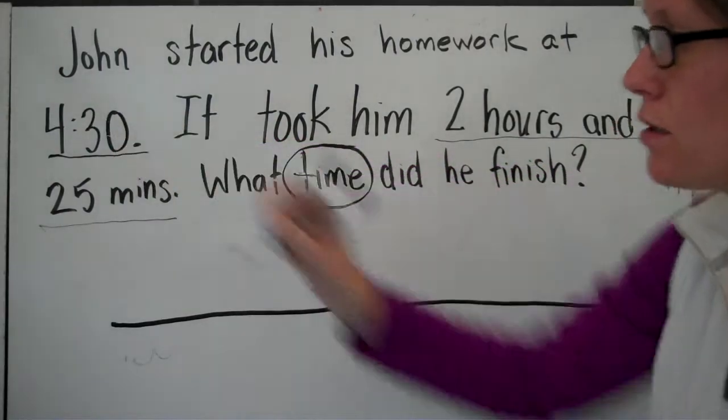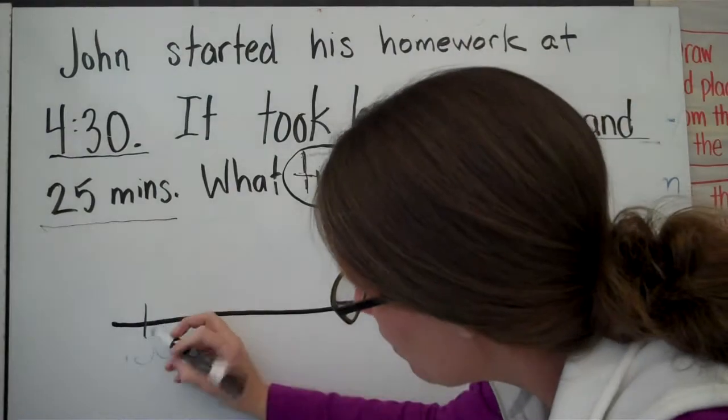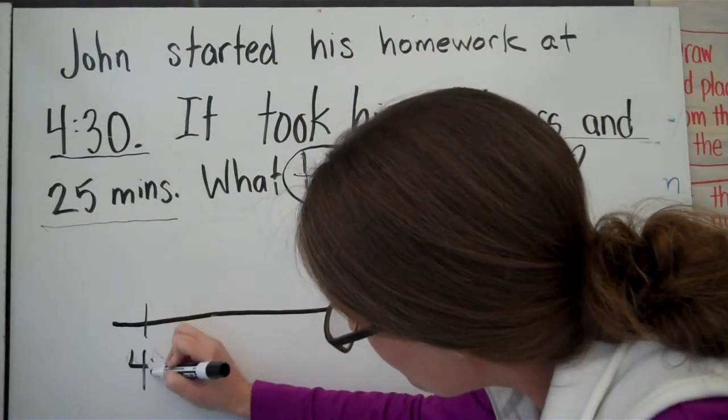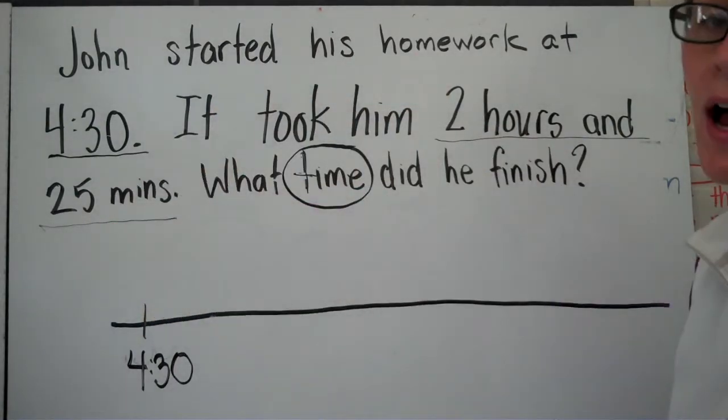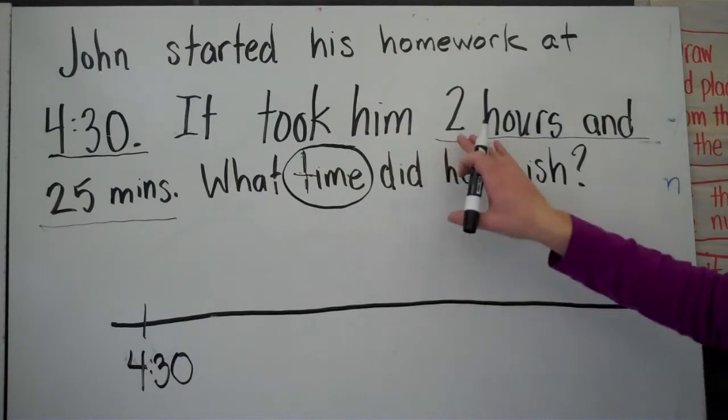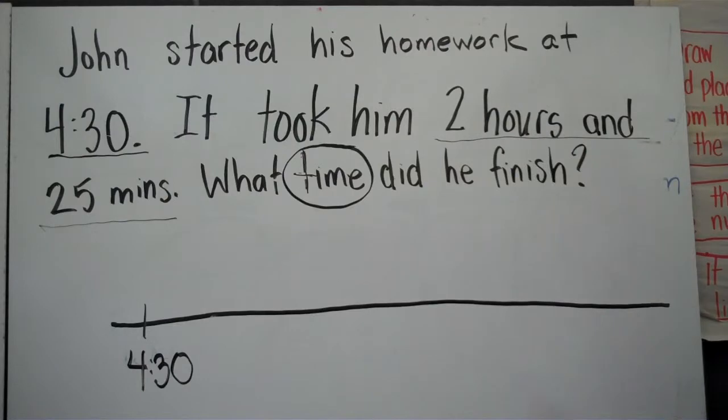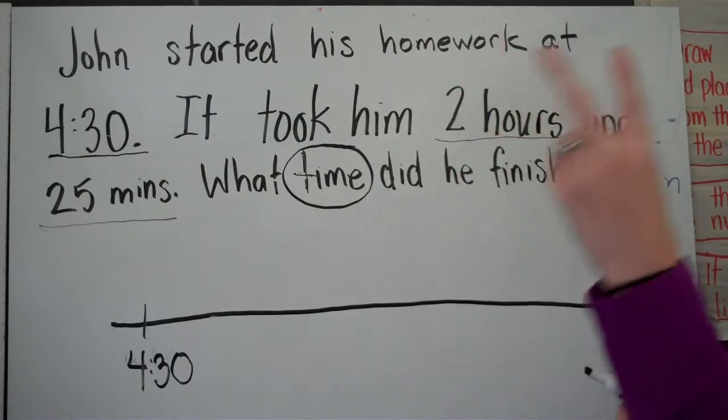So I'm going to draw a number line. And I'm going to put my start time because he said he started at 4:30. And now I'm going to start doing some hopping. I'm going to make big hops for hours and little hops for minutes. I'm going to hop 2 times for 2 hours. 2 hops.